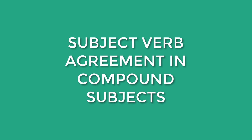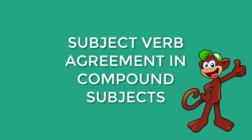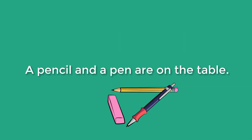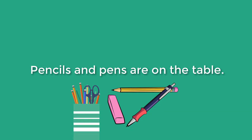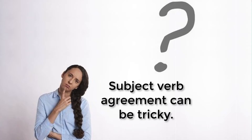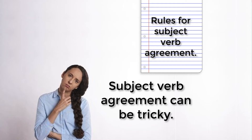Let's go on to compound subjects. Compound subjects are also straightforward. When the nouns are joined by the word and, you will use a plural verb. For example, a pencil and a pen are on the table. Pencils and pens are on the table. In these examples, the subject-verb agreement is also straightforward. But sometimes subject-verb agreement is a little tricky, and it's not as straightforward as the examples we have seen here, so there are a few rules that you must follow.